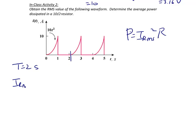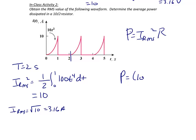So I_RMS squared would be equal to 1 over 2, the integral from 0 to 1. This equation is 10t squared. 10t squared squared would be 100t to the 4th dt. So I_RMS squared is equal to 10, and I_RMS is equal to the square root of 10, or 3.16 amps. And finally, the power is equal to 10 times a 10 ohm resistor, which would be 100 watts.